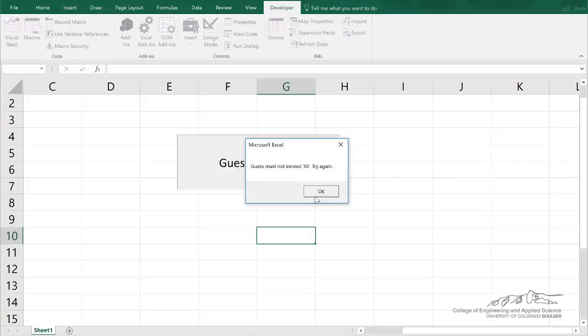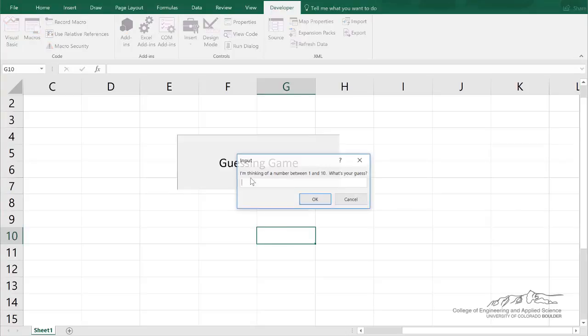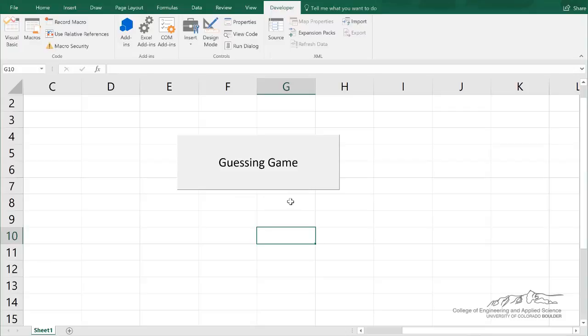For example, if I input something greater than 10, it says guess must not exceed 10. And also when I press cancel, it just closes, and when I press the close box up here, it just closes. So that's what we're going to be making in this pair of screencasts.